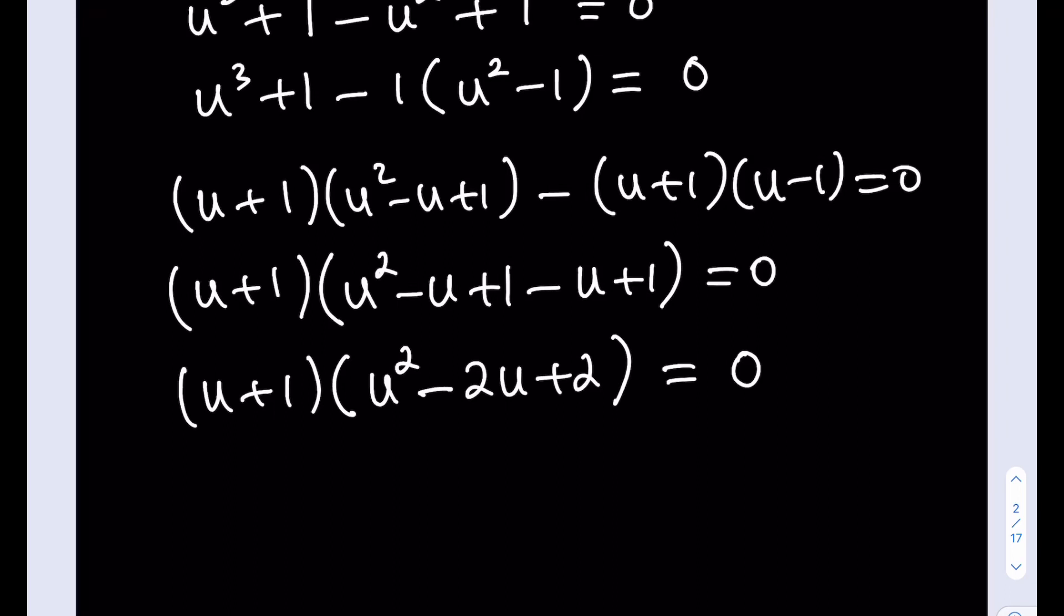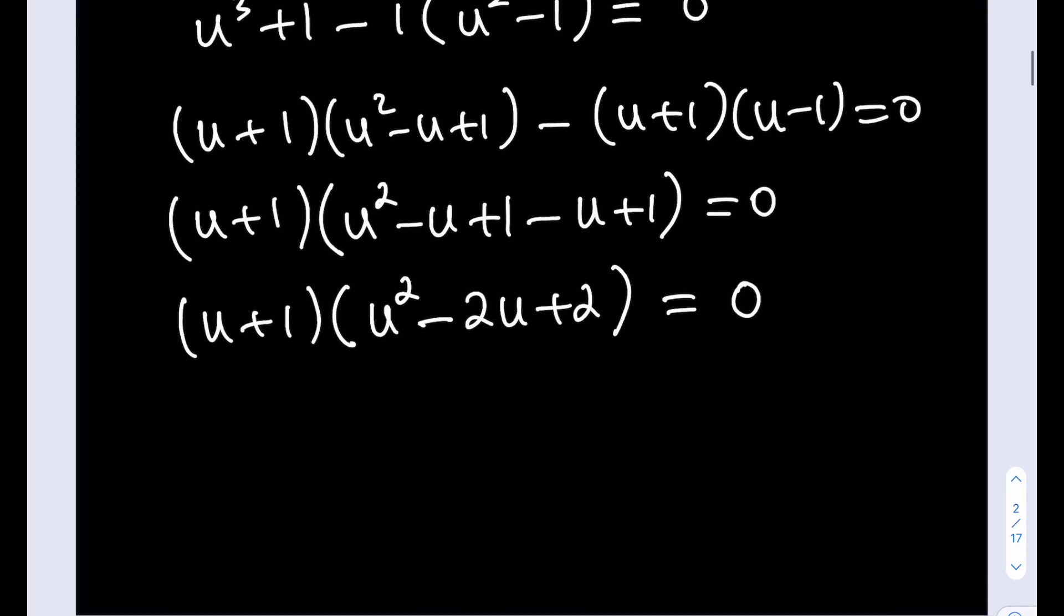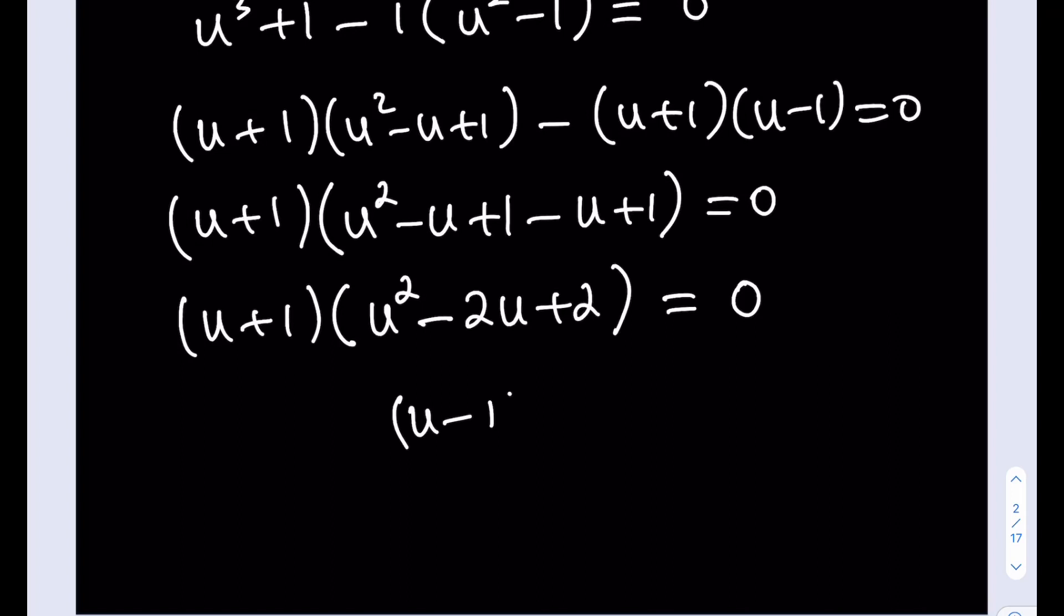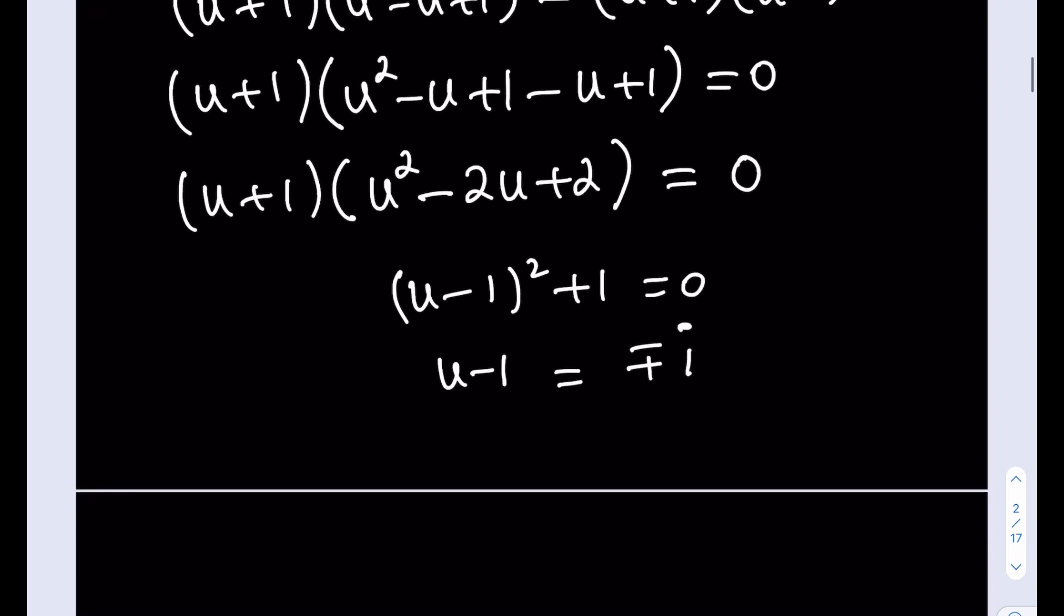From here, we know that u equals negative 1 is a solution, obviously. What is the other one? Well, that's going to be a complex solution because you can write this as u minus 1 quantity squared plus 1. If you set it equal to 0, here comes our famous i. u minus 1 is going to be plus minus i here. So from here, we are finding that u is equal to 1 plus minus i.